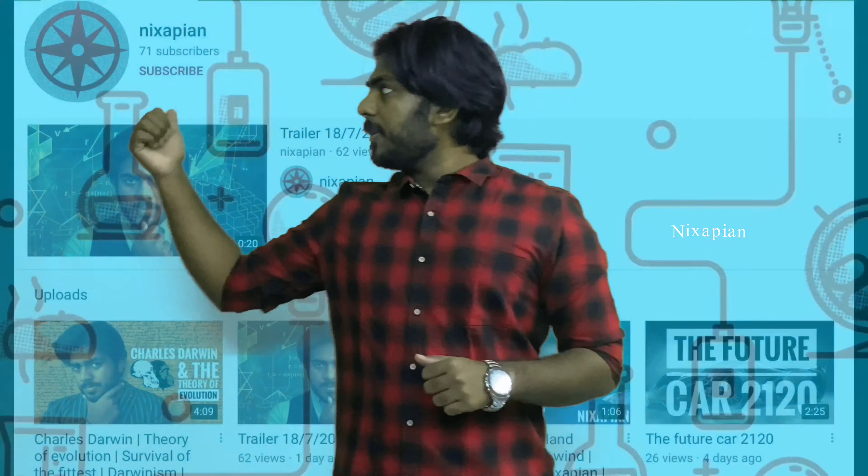Hey guys, this is Vishy from Nexus Sapien. I'm going to be telling you about ABS, or the Anti-lock Braking System, also known as the Anti-Skid Braking System. It's used in most vehicles including cars, buses, and even aircraft. It helps in prevention of accidents, gives better control of the steering while braking, works on the principle of threshold or cadence braking, and decreases braking distance.